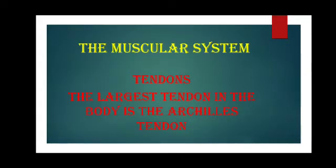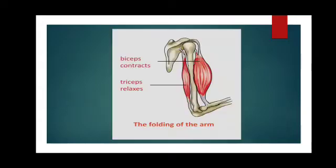We can walk, run and do other activities because of this tendon. The muscles can only pull the bones and they do not push them. This is why the body uses two muscles to make a bone move. Let us understand with the help of this diagram. As you can see here, there are two types of muscles — biceps and triceps.